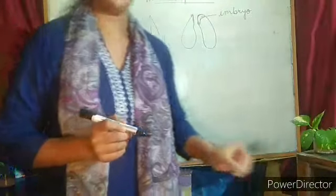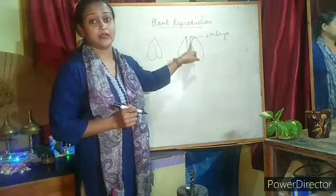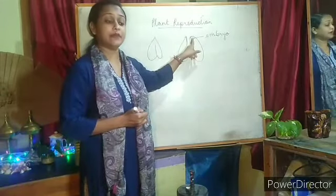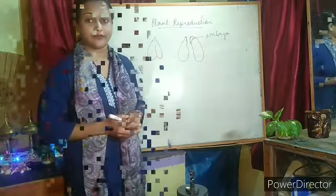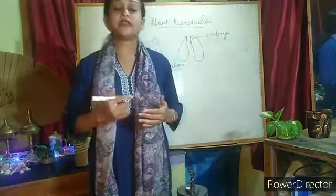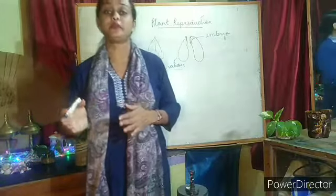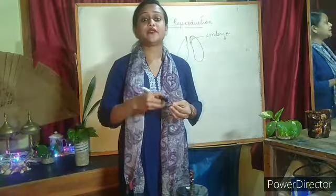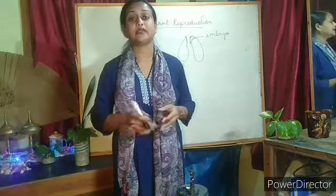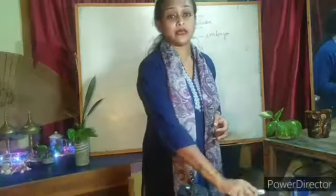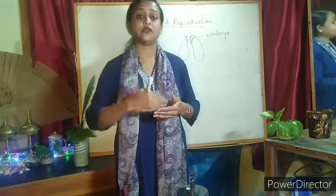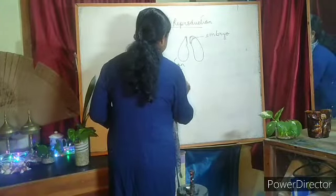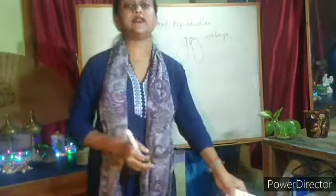This embryo is actually the baby plant. When the seed germinates, it is the baby plant which comes from this embryo and grows into a new plant. Germination is the process by which a seed grows into a new plant — when we sow some seeds into the soil, after a few days a new plant comes out. This entire process is termed germination. The baby plant that grows from the seed due to germination is known as a seedling.